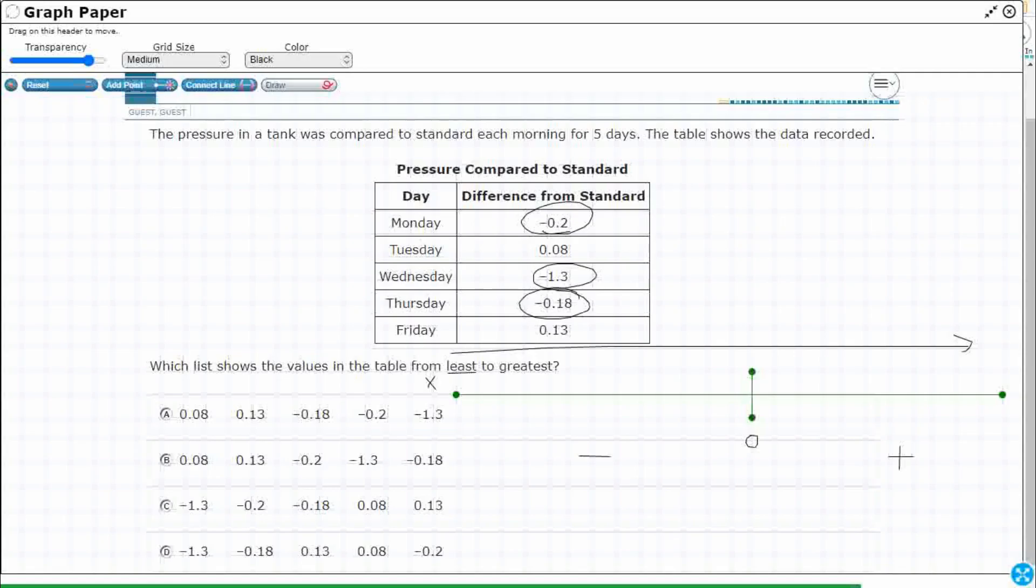It looks like we've got some that go to the tenths and some that go to the hundredths. So let's line them up over here. Negative 0.2. I've got 0.08 or eight hundredths. I've got negative 1.3 or 1 and 3 tenths. I've got negative 1.8 tenths. Notice how the eights, those two eights in the hundredths spot kind of stand out. And I've got my 0.13 hundredths.